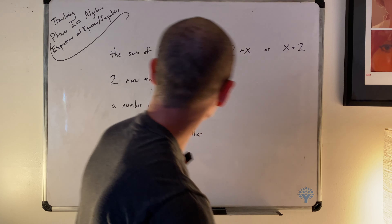Our third example: 'a number increased by two.' What does it mean to be increased? It means to go up by. So a number increased by two means a number increased by two — that's x plus two, or two plus x. A number x increased by two means two plus x or x plus two.